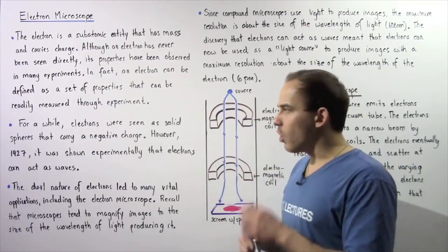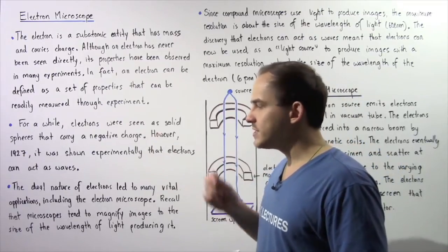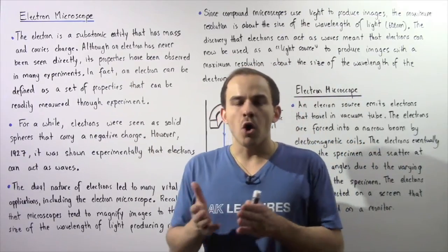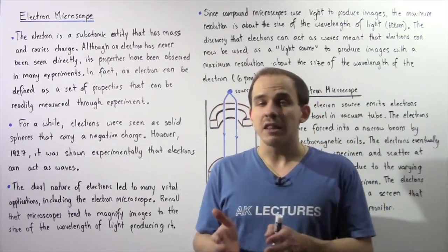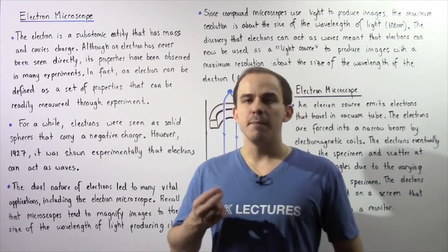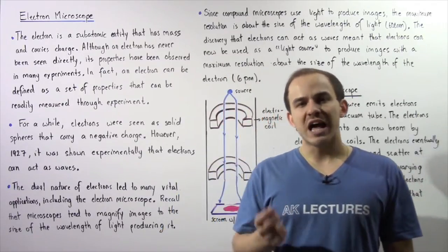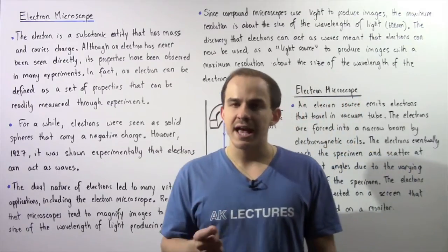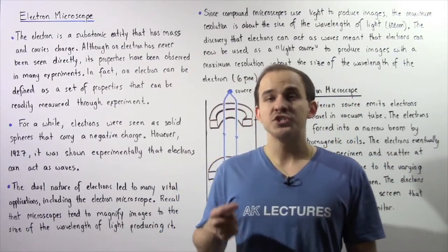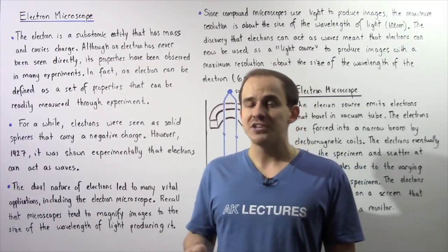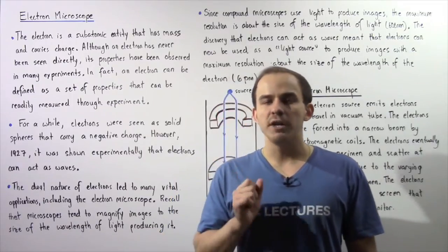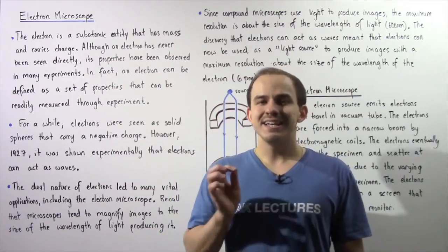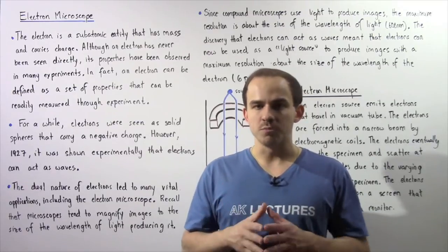Now for a very long time, electrons were seen as if they were particles, as if they were solid spheres that carry a mass equal to 9.11 times 10 to the negative 31 kilograms and which carry a quantity of charge given by negative 1.6 times 10 to the negative 19 coulombs.